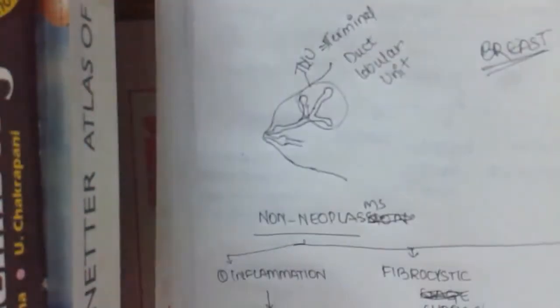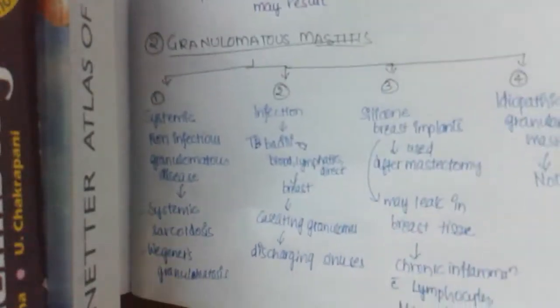Hello friends, now let us continue the chapter of inflammation, inflammatory lesions of the breast. We have already dealt with two of the inflammatory lesions of the breast, which include acute mastitis or breast abscess and granulomatous mastitis.